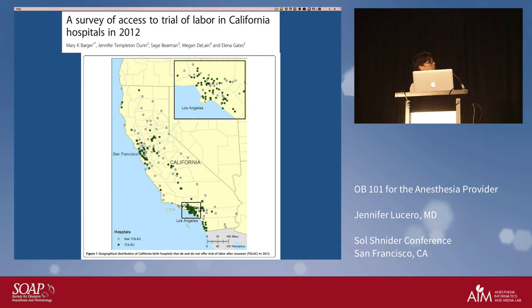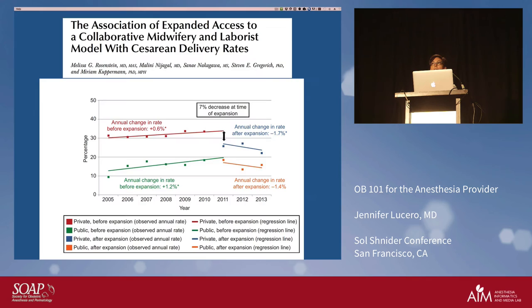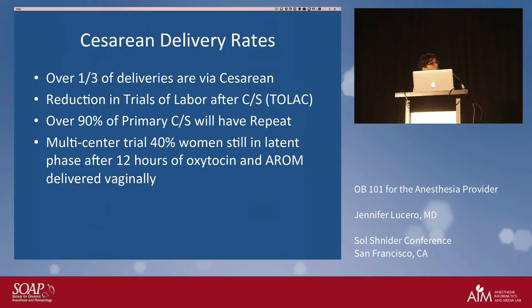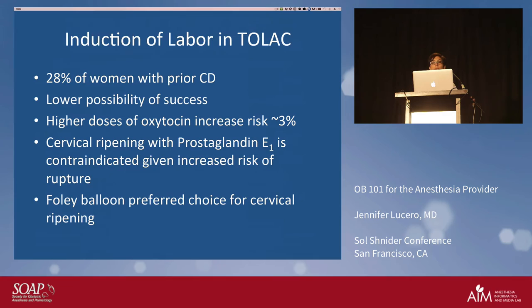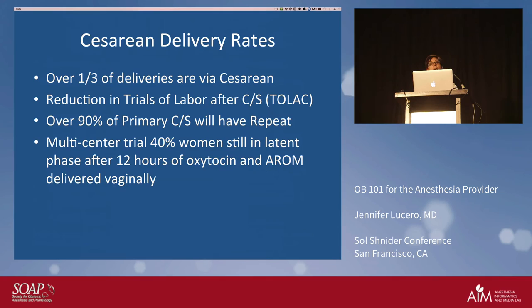The overall TOLAC success rate is 60 to 80 percent. An online labor calculator at the perinatology website lets women plug in their numbers. Factors that reduce success include African-American or Latino ethnicity, prior C-section for arrest of dilation or descent, higher BMI, and shorter interval between pregnancies. Facilities offering TOLAC must have resources to respond to obstetrical emergencies, as the most serious risk is uterine rupture — a risk to both neonate and mother.